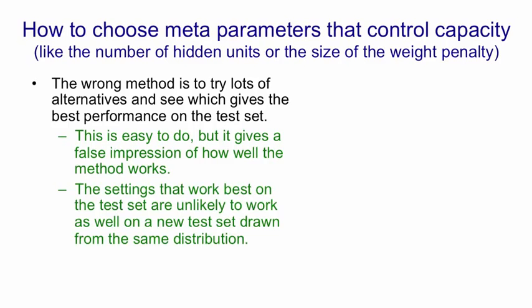So the settings that work best for one particular test set are unlikely to work as well on a new test set that's drawn from the same distribution, because they've been tuned to that particular test set. And that means you get a false impression of how well you would do on a new test set.